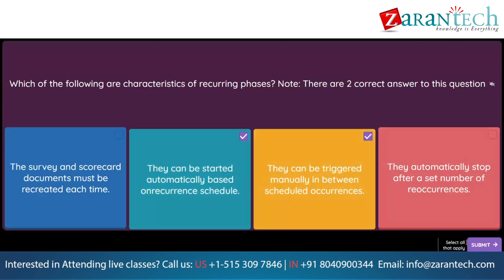Question. Which of the following actions are available from the registration area in the supplier 360-degree profile? Note, there are three correct answers. Option 1: Send a modular questionnaire to the supplier. Option 2: Invite or re-invite a new supplier to register. Option 3: See the registration status. Option 4: Track the progress of the registration on the status graph. Option 5: Initiate a new qualification for a registered supplier.